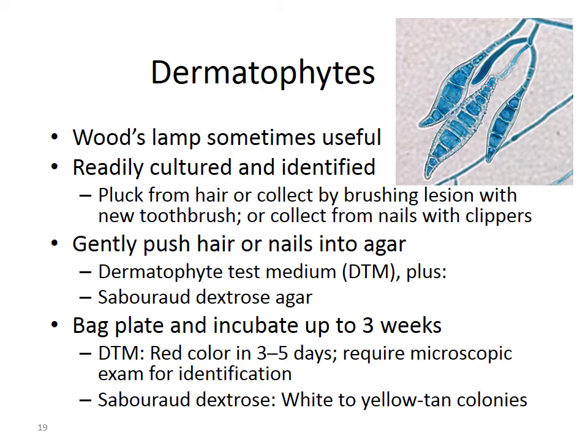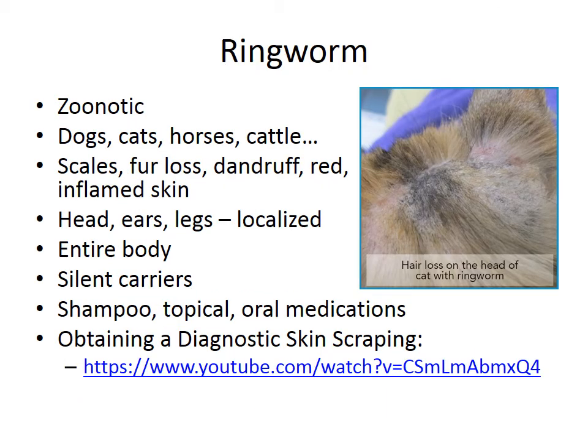You can eventually get growth of the fungus and look at it microscopically to identify it. Ringworm is zoonotic — dogs, cats, horses, and cattle are commonly affected. Clients are at risk as well as their animals. Signs include scales, loss of fur, dandruff, and red inflamed skin, tending to occur on the head, ears, and legs. It can be localized or over the entire body. There are also silent carriers who show no clinical signs but can still transmit the infection.